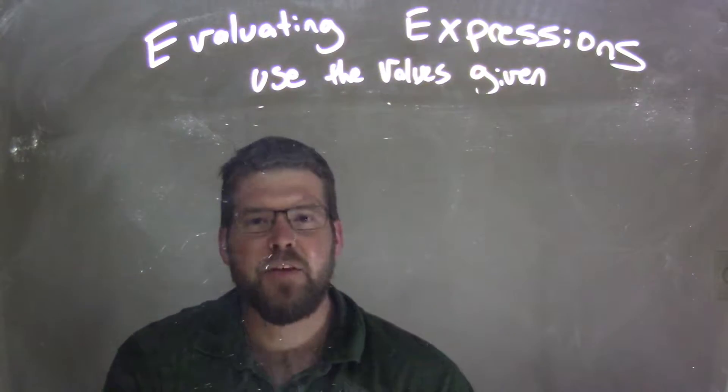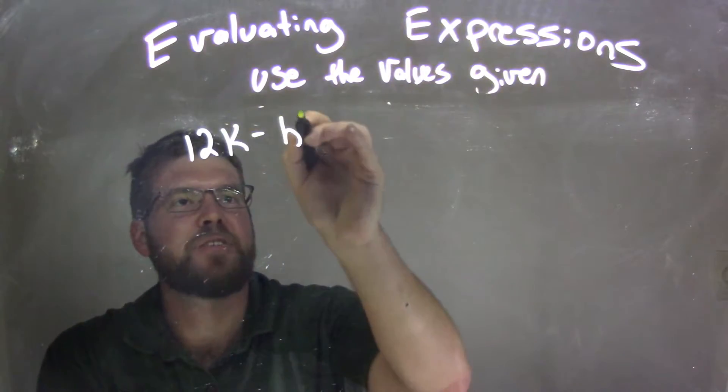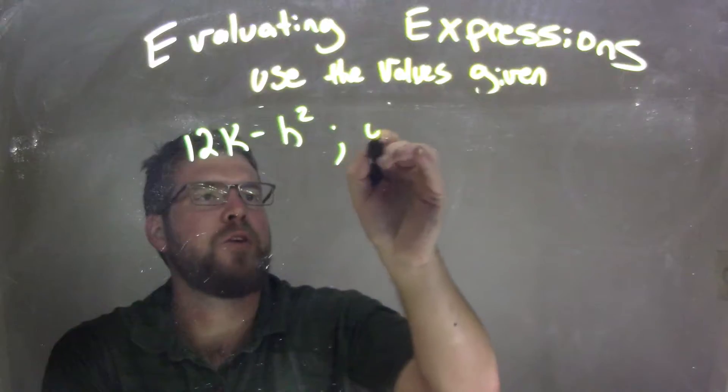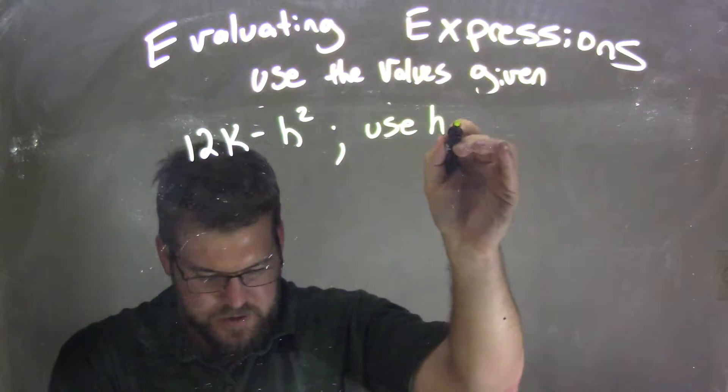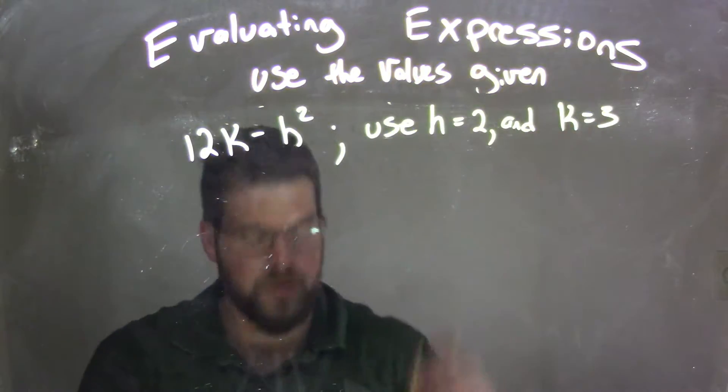So if I was given this expression, 12k minus h squared, and we want to use h to be 2 and k to equal 3.